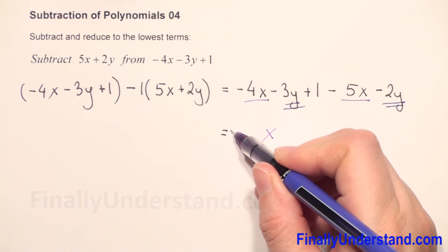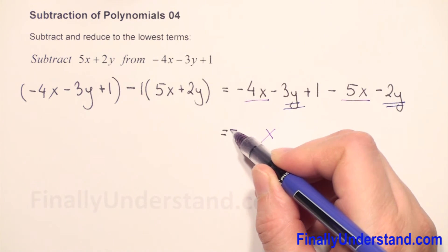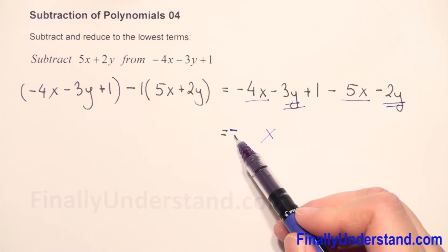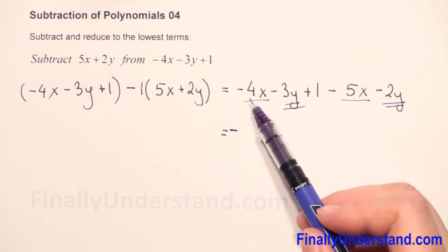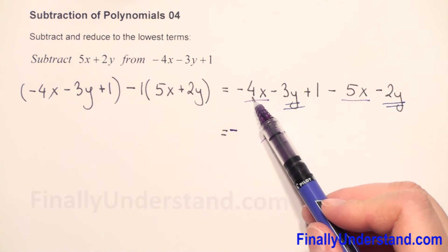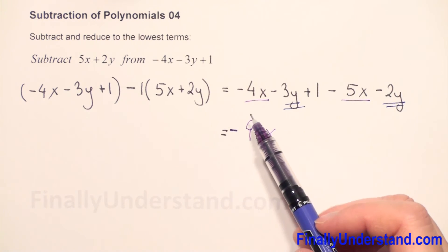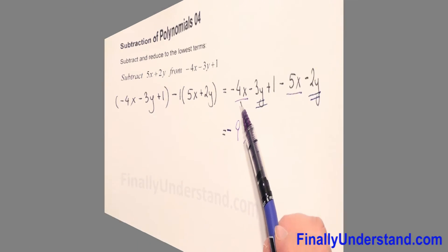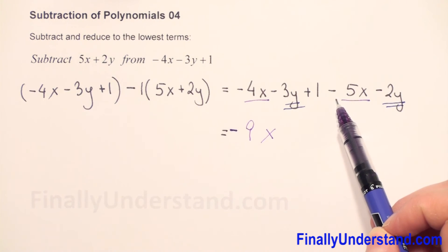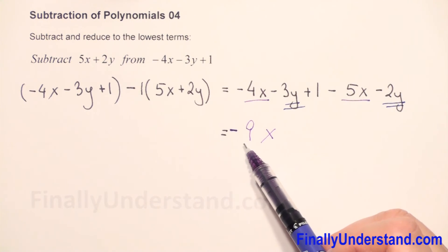So it will be a negative number. We keep the sign because both numbers are negative, and 4 plus 5 is 9. Or for some it may be easier: negative 4 minus 5 is negative 9. And we write x.